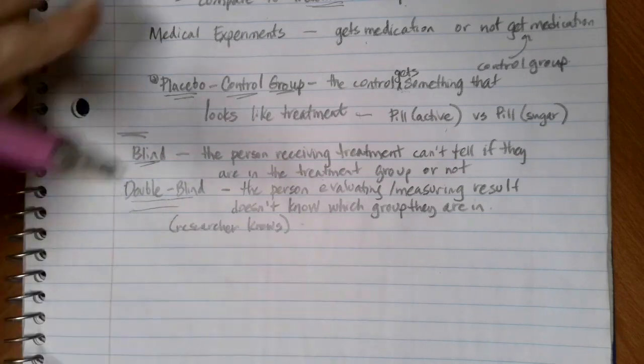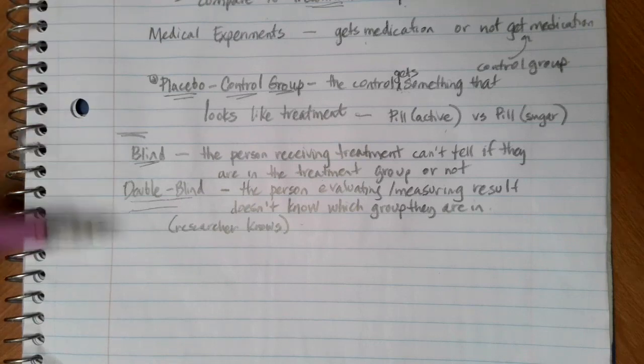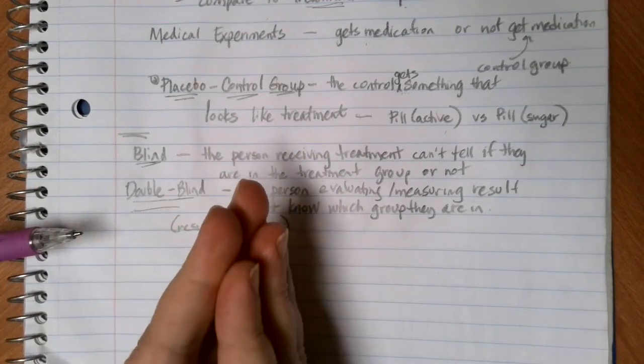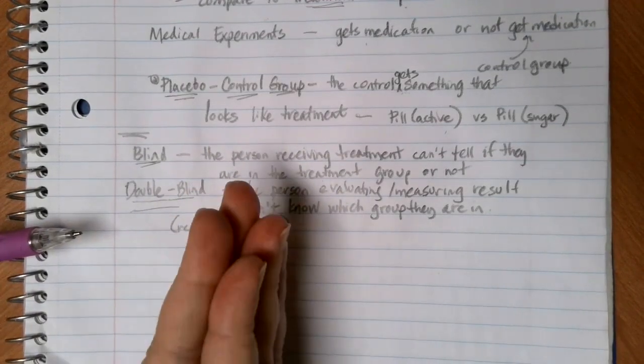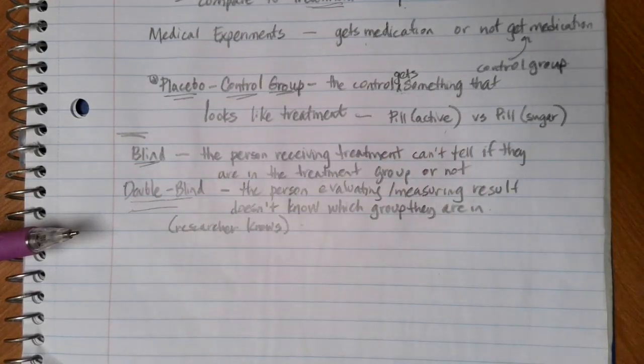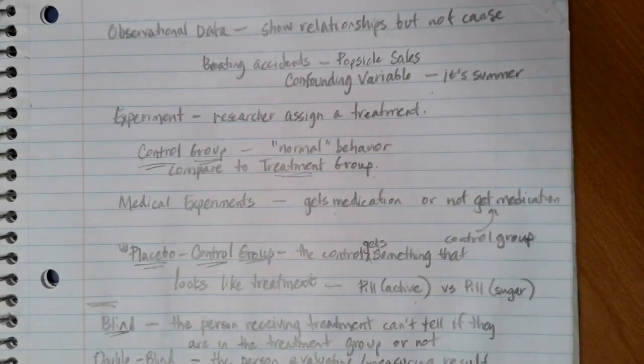And I think that goes through our different qualifications of types of experiments. And again, the more of these that you can take into account, the better job you're doing of isolating the variable or treatment that you're trying to study. And then once you do that, then you can actually start working towards establishing cause. Otherwise, we're just establishing relationships, which is useful, but not necessarily always helpful, like our boating accident popsicle sale discussion earlier.